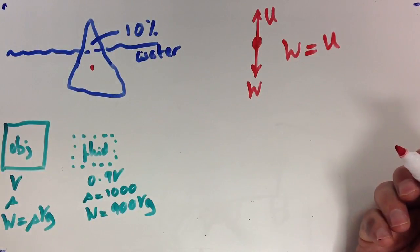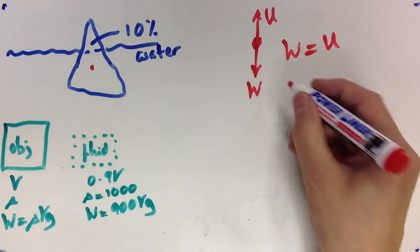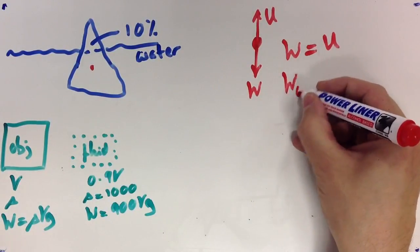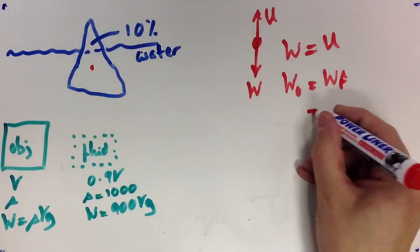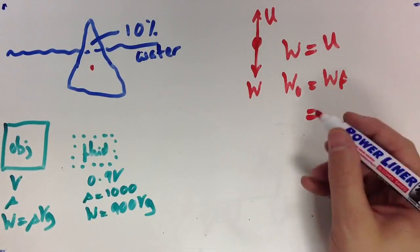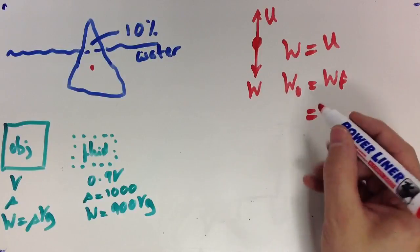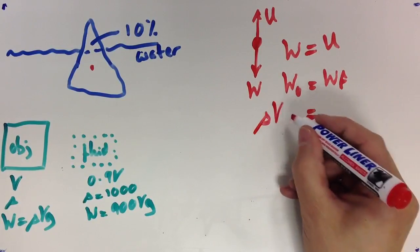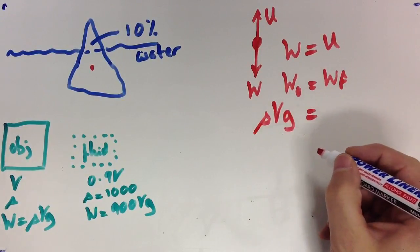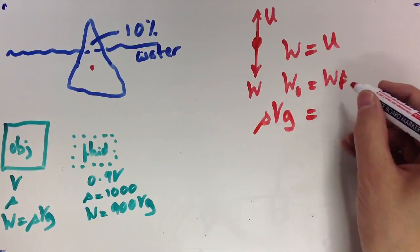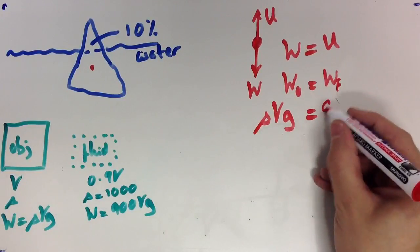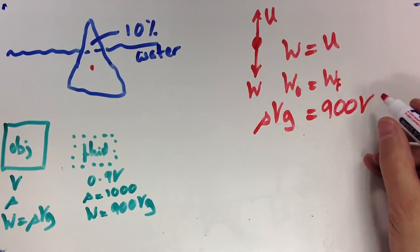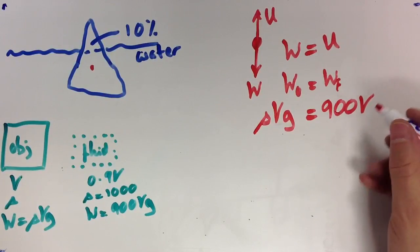Well, what else do I know about W and U? I know that U is equal to the weight of the fluid displaced. So, I know that WO is equal to WF. Well, I've worked out values for WO and WF. So, if I go back to those two and substitute into the equation to actually analyse each force, I know WO is equal to the density of the object times the volume of the object times gravity. And I know the weight of fluid—there should be a little F there—the weight of the fluid is equal to 900VG.